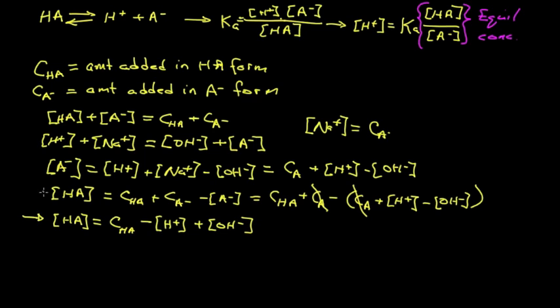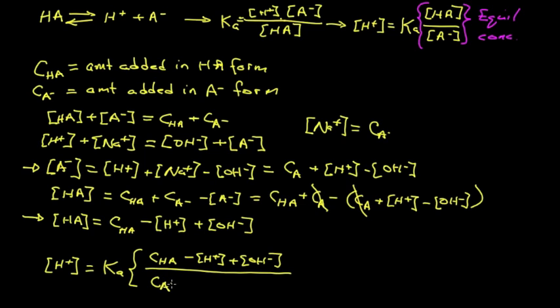Now these two equations can be used to substitute back in our expression for the hydrogen ion concentration. It's equal to KA times the ratio HA over A-. The HA is this expression: CHA minus H+ plus the hydroxide. And CA minus—now we have a plus hydrogen ion concentration and minus the hydroxide. So it's a somewhat similar pattern on the bottom; it's just the signs change.